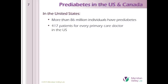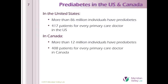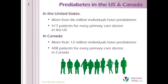What does that mean to your practice? In the United States, more than 86 million people have prediabetes — that equates to 417 patients for every primary care doctor. In Canada, the numbers are similar with 408 patients for every primary care MD. And for these 98 million people with prediabetes in the U.S. and Canada, nine out of every ten don't know they have a problem. And there are many more who are insulin resistant but have not yet progressed to prediabetes.